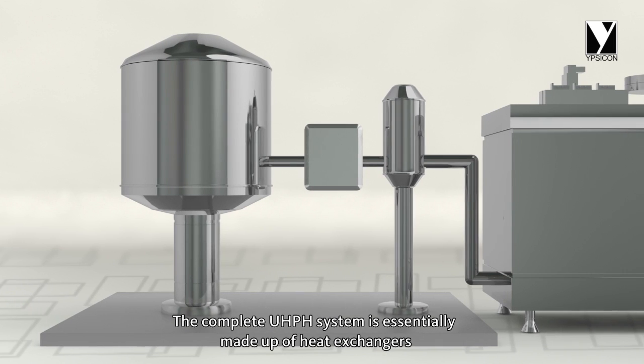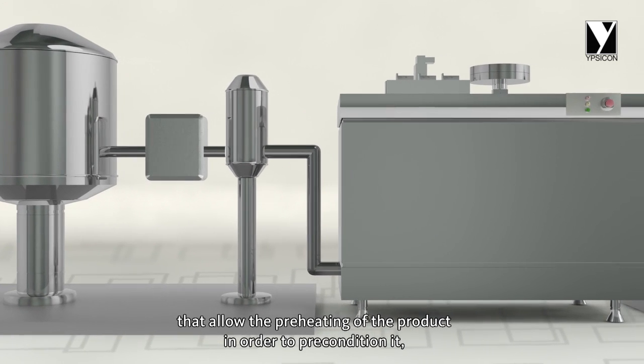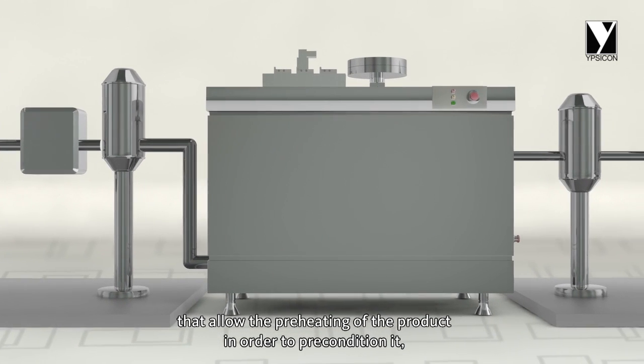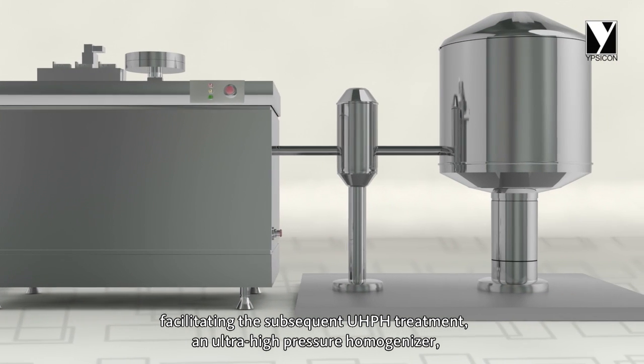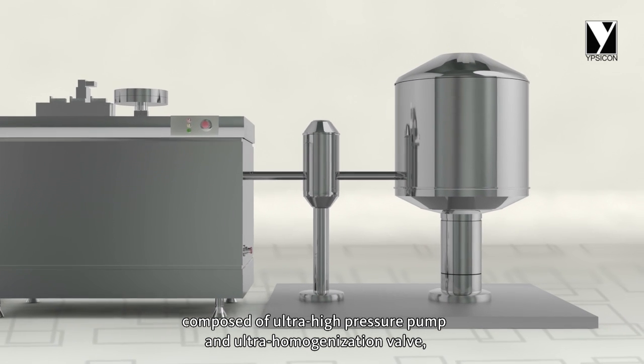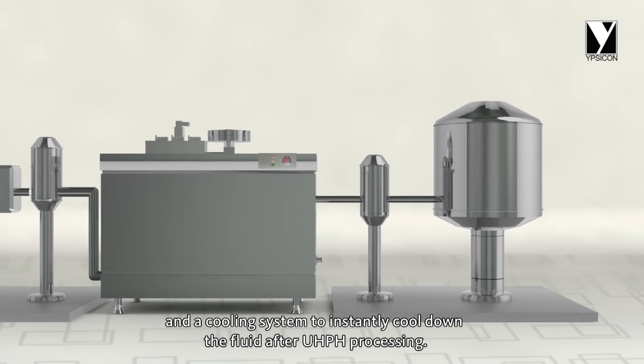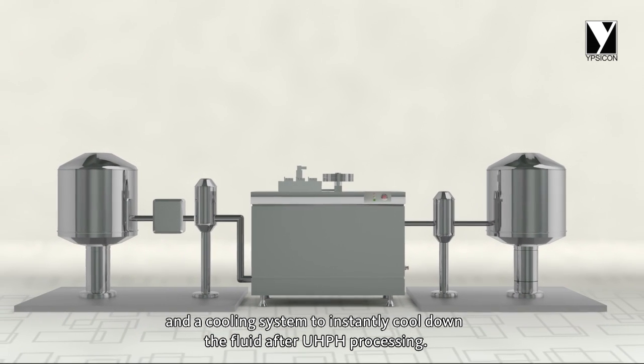The complete UHPH system is essentially made up of heat exchangers that allow the preheating of the product in order to precondition it, facilitating the subsequent UHPH treatment; an ultra-high pressure homogenizer composed of ultra-high pressure pump and ultra-homogenization valve; and a cooling system to instantly cool down the fluid after UHPH processing.